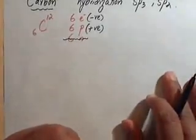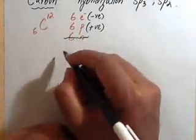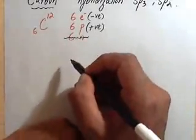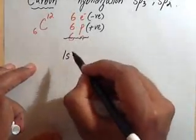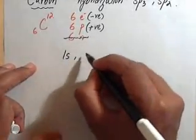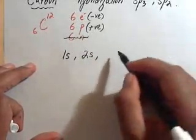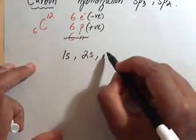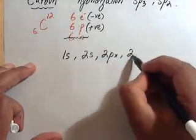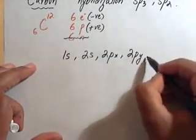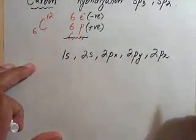Now we'll draw the electronic configuration of a carbon atom. If we draw the orbitals according to increasing energy levels, the first shell has only one s orbital. The second shell has 4 orbitals: one is the 2s orbital, and then you have 3p orbitals, which are 2px, 2py and 2pz orbitals.